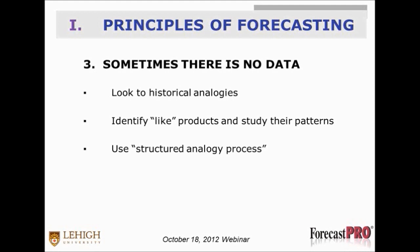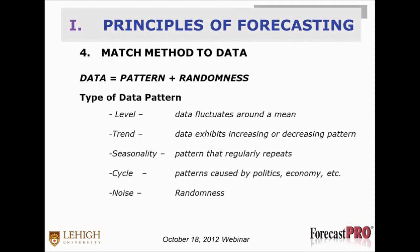When there is no reliable data, we use other strategies. We look to historical analogies. We might identify like products and study their patterns. We could use a structured analogy process that allows us, in a very structured format, to use demands for like products and create a whole new set of forecasts. ForecastPro included enables you to do this. The key thing is to ask yourself: is there reliable data, or should we look to like products rather than force-fitting historical data that might not represent the future?